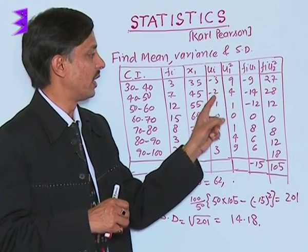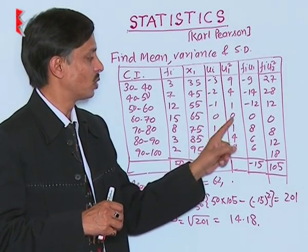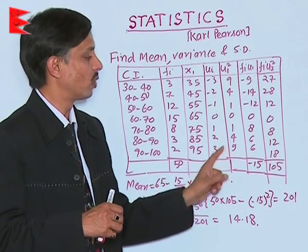The uᵢ² values are: 9, 4, 1, 0, 1, 4, 9.